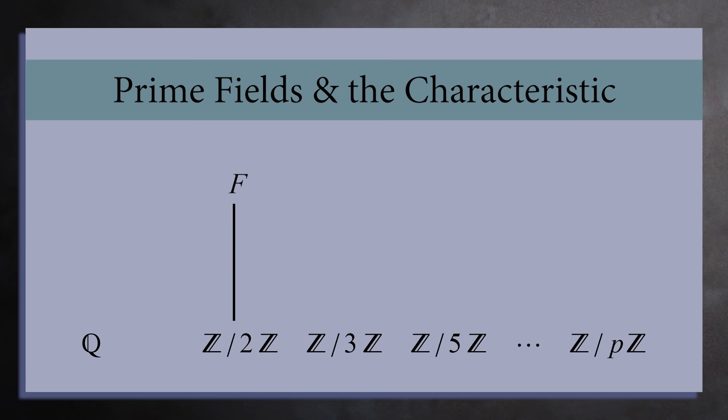If F is an extension of the integers mod 2, we say it has characteristic 2. If it's an extension of the integers mod 3, it has characteristic 3. And if it's an extension of the integers mod p, we say F has characteristic p. But if F is an extension of the rational numbers, we say it has characteristic 0. So the characteristic of a field tells us which prime field it extends.